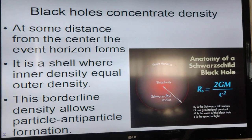If you move away from the center of the black hole, there is a point called the event horizon. The event horizon is almost like a shell, not a solid shell, not a liquid or gaseous shell. It's the edge where density inside the black hole is equal to the density on the outside of the black hole.